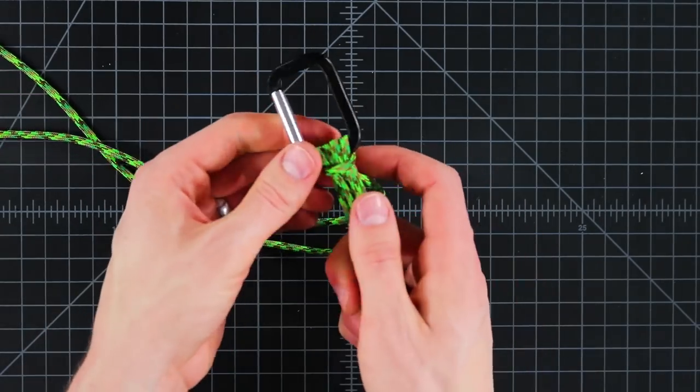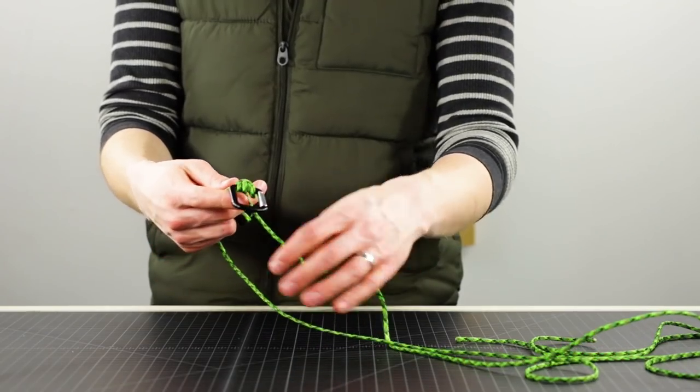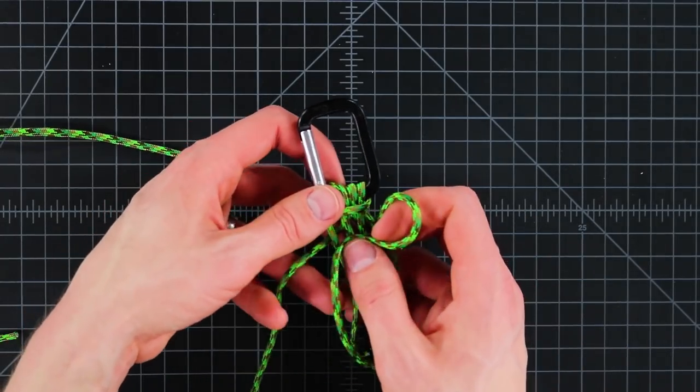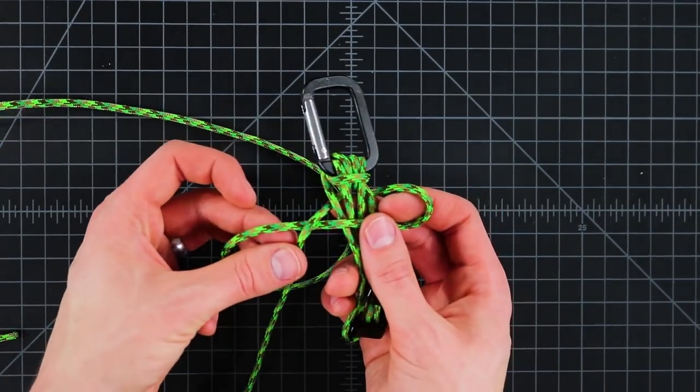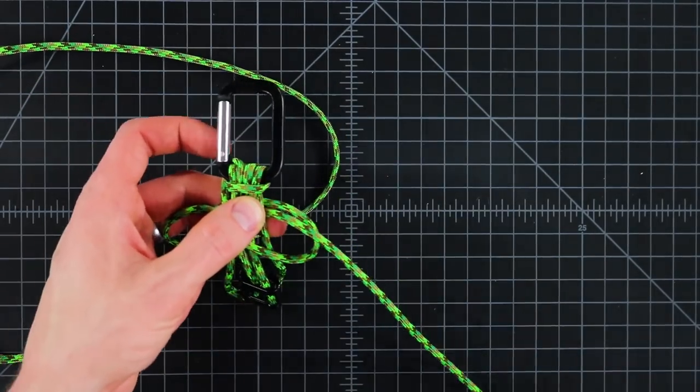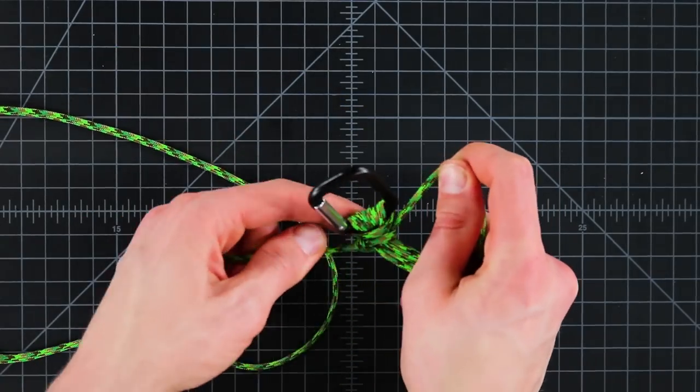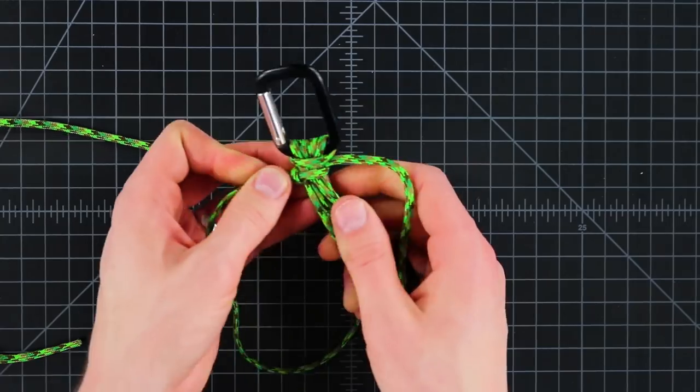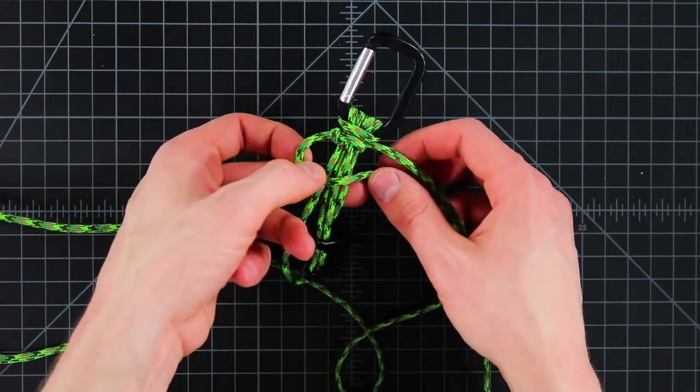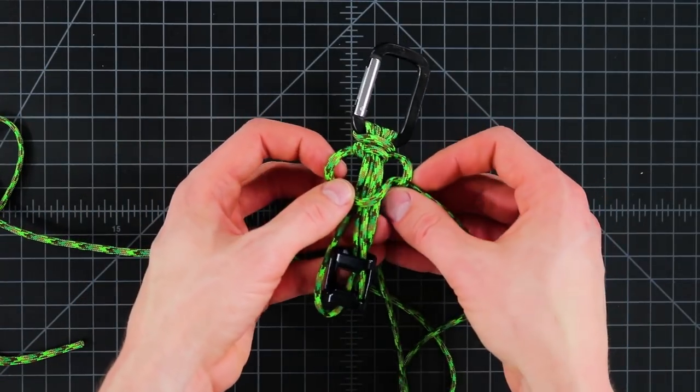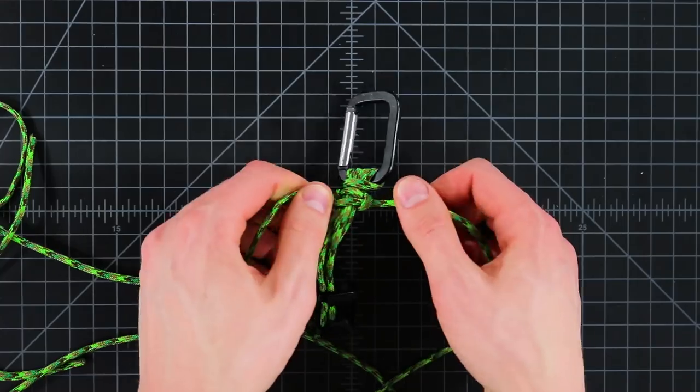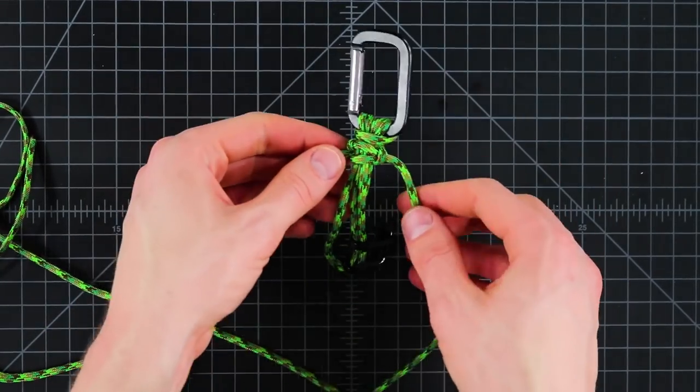And from there we're just going to go right into the cobra weave. So you take one cord on each side. Make sure you get them on the right side. We're going to put our right cord over the top and underneath this far left cord. Then the left cord is going to go around the back and up through the loop. And we're just going to do the mirror image of that with our left cord over the top. Our right cord around the back and through the loop. And that's the essence of our cobra or square knot weave.